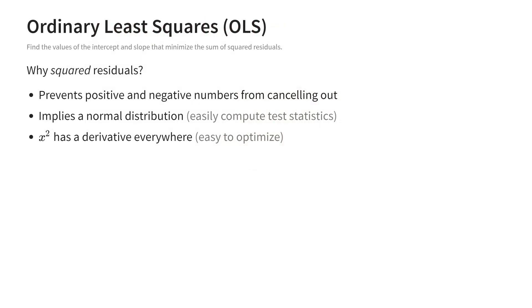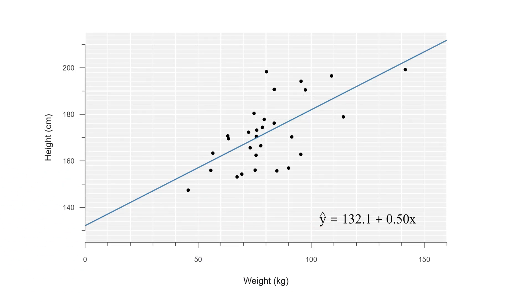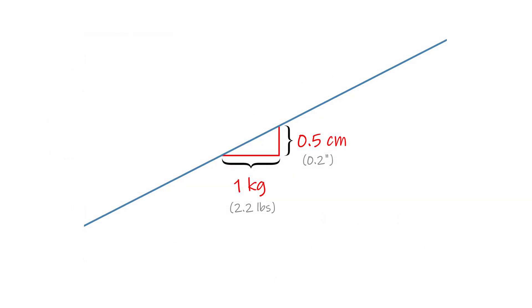We use squaring for a number of reasons, but most importantly it's just easier to work with. In this example the line goes up with a slope of about 0.5, meaning that on average individuals who weigh 1 kilo more are about half a centimeter taller.